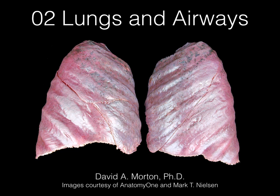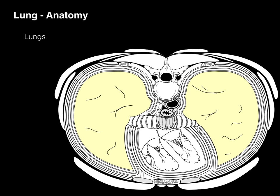Let's talk about lungs and airways. Here's a cross section through the thoracic cavity, and in yellow we see the right lung as well as the left lung. Remember, this is an anatomical picture — whenever you see illustrations, the right is on our left side as we're looking from top to bottom. That's posterior and that's anterior. This is an anatomical picture, so there's our orientation.